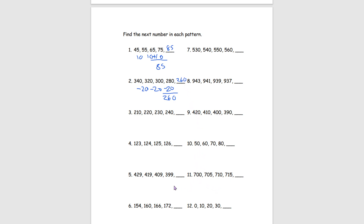One more example from this page — number 6. We have 154, 160, 166, and 172. Finding the common difference: 154 to 160 is plus 6, 160 to 166 is also plus 6, and 166 to 172 is also plus 6. So our pattern is plus 6. Adding 6 to 172: 2 plus 6 is 8, bring down the 7, bring down the 1. Our answer is 178 for number 6.